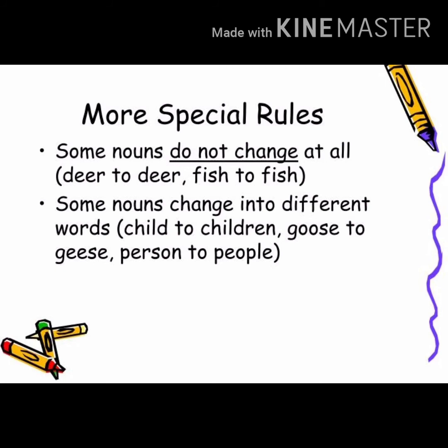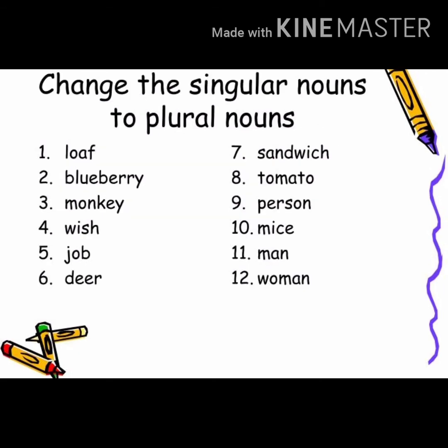Some nouns change into completely different words: child changes to children, goose changes to geese, and person changes to people. Now I have given you some words — loaf, blueberry, monkey, fish, job, deer, sandwich, tomato, person, mice, man, woman — you have to change them into plural nouns. Hope you have understood singular and plural noun. Let's proceed further.